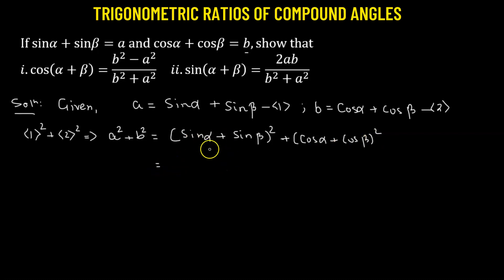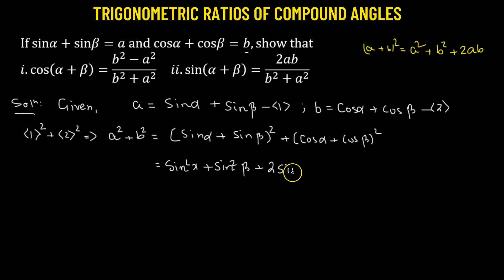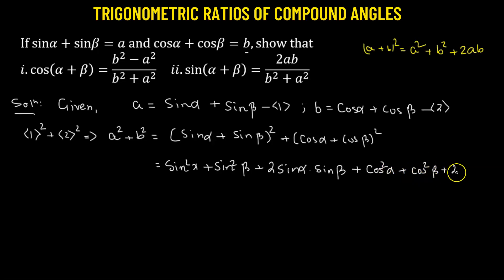Let's expand sine alpha plus sine beta whole squared. We know that the expansion of (a + b)² is a² + b² + 2ab. Expanding sine alpha plus sine beta whole squared, and to it we add the expansion of cosine alpha plus cosine beta whole squared: cosine squared alpha plus cosine squared beta plus 2 times cosine alpha times cosine beta.